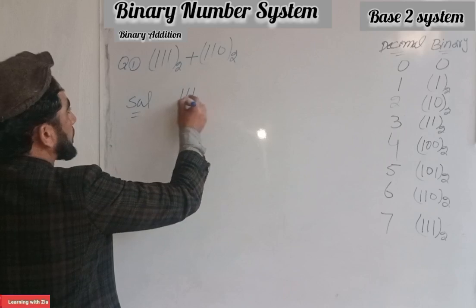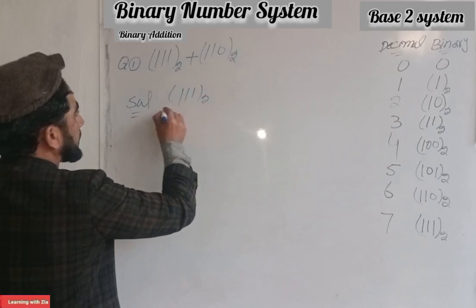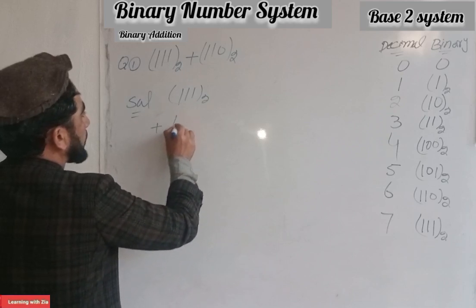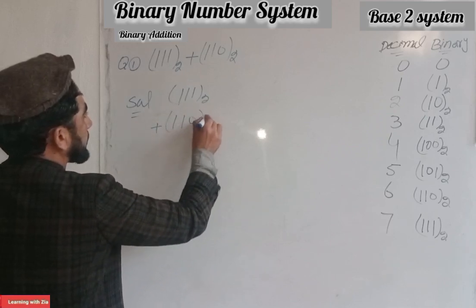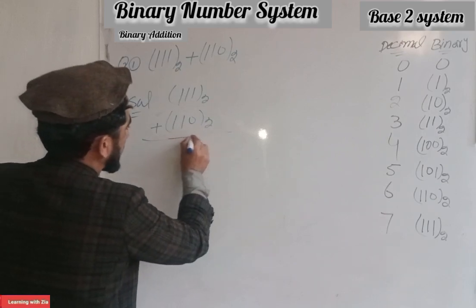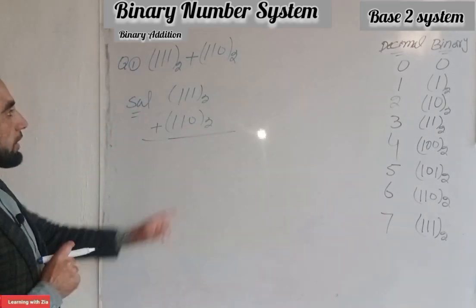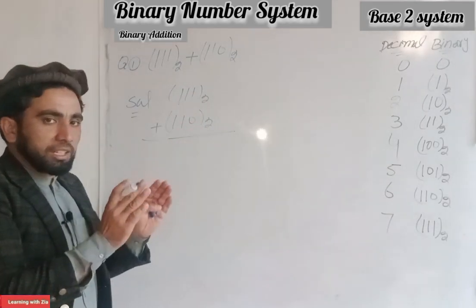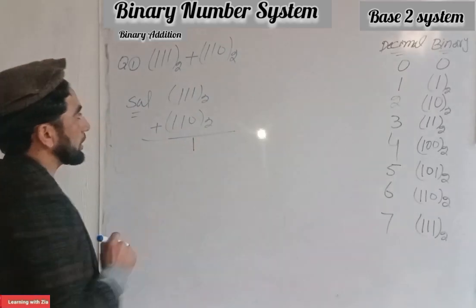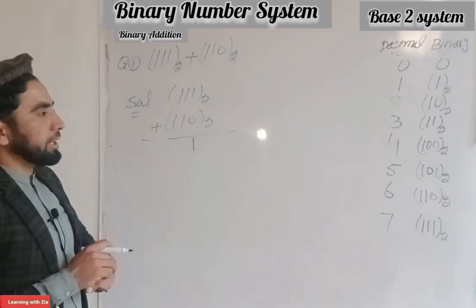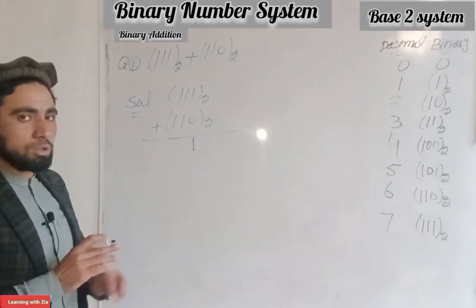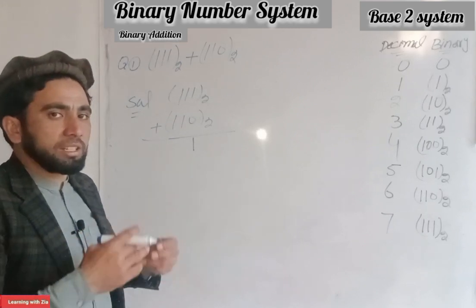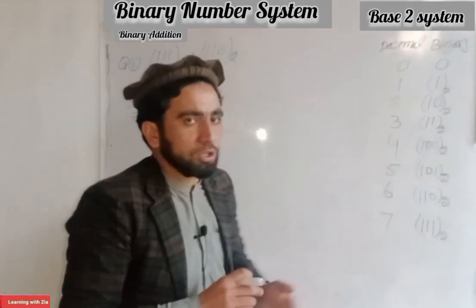The solution: the number 111 plus 110. Starting from the right side, 1 plus 0 equals 1, then 1 plus 1 in binary — carry 1. Then 1 plus 1 plus carry gives the next result in the binary addition.